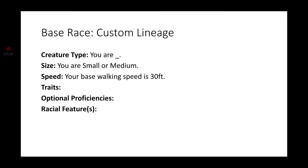For a base, I would say use the custom lineage as a starting point for your race: your creature type, your size, your speed, what traits it might have, optional proficiencies, and of course racial features.